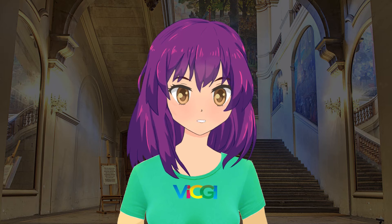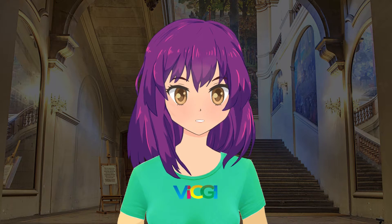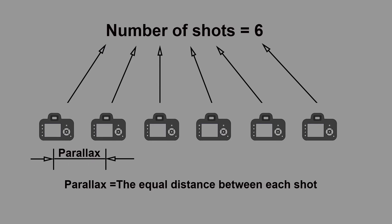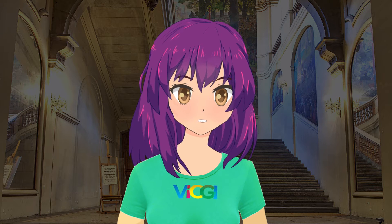When we take pictures along a straight line we get two numbers: the number of shots and the parallax. The number of shots is straightforward — it's basically the number of pictures we take along a straight line, and also the number of stripes under each lenticule. The parallax is the equal distance between each shot. Although for pseudo 3D we are not taking pictures this way, we will use these two numbers in our later interlacing process to simulate the picture-taking process.